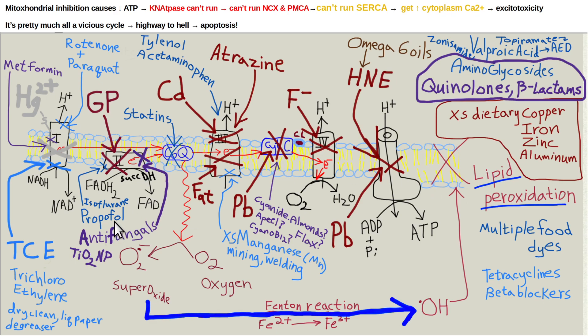Propofol is a really commonly used sedative in medical procedures — I wouldn't let anybody give that to me. Isoflurane is another anesthetic. The way dietary fat slows down energy production in the brain is another reason I don't want to eat a high-fat diet.